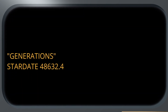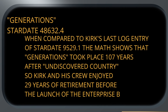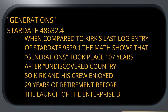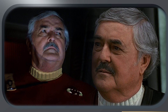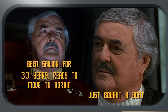Based on Picard's log entry from Generations and Kirk's log entry from the end of The Undiscovered Country, we can determine that Generations takes place 107 years after The Undiscovered Country — assuming TOS-era stardates. But then, in order to make it so that Generations takes place 78 years after the launch of the Enterprise-B, Kirk and his crew would have had to have been retired for 29 years prior to the launch of the Enterprise-B.